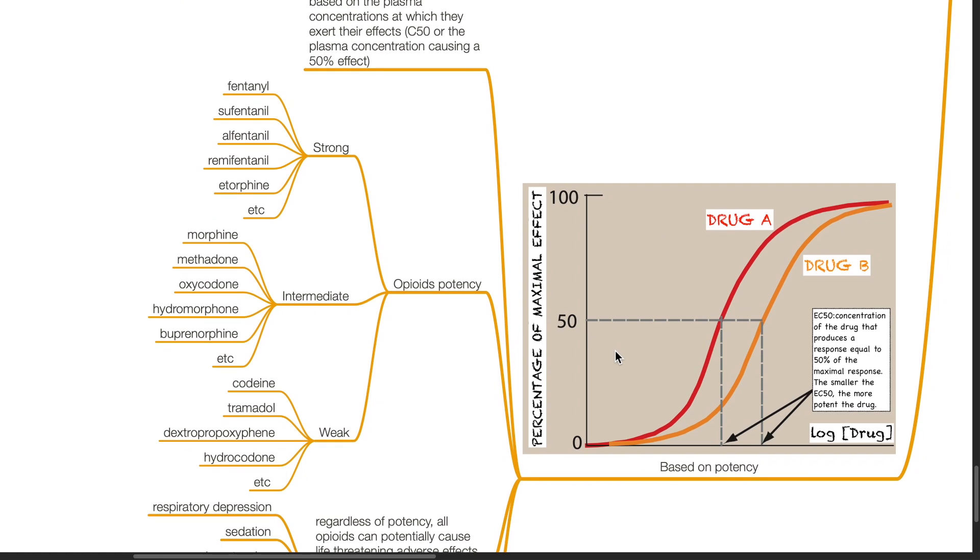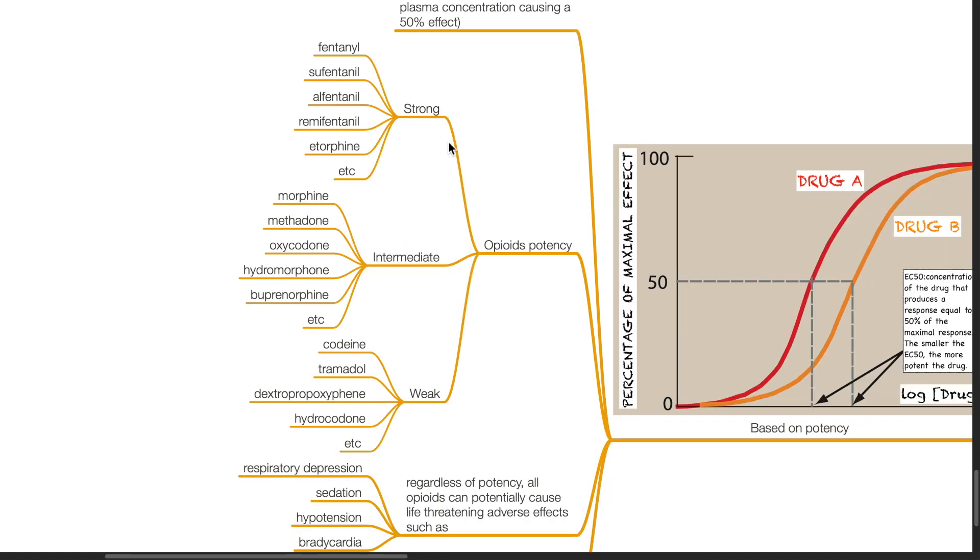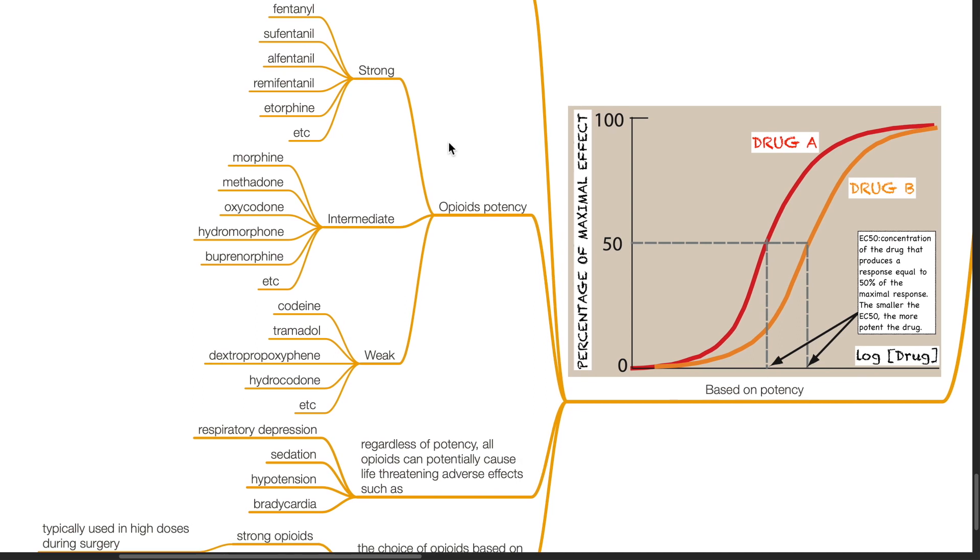Opioids can be classified based on their potency. This is based on the plasma concentrations at which they exert their effects, measured by C50 or the plasma concentration causing a 50% effect. Examples of strong opioids include fentanyl, sufentanyl, alfentanyl, remifentanyl, etorphine, etc. Examples of intermediate-strength opioids include morphine, methadone, oxycodone, hydromorphone, buprenorphine. Examples of weak opioids include codeine, tramadol, dextropropoxyphine, hydrocodone, etc.